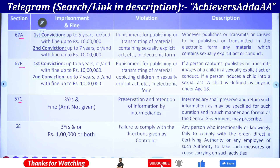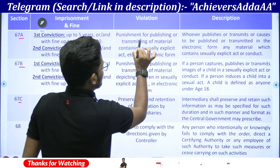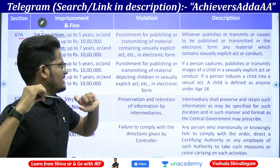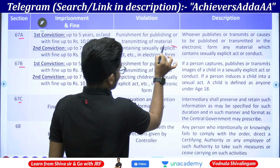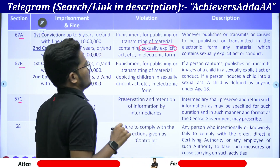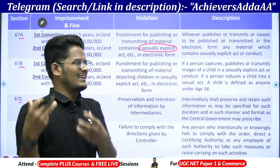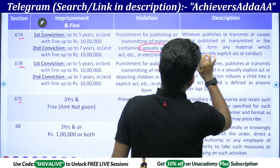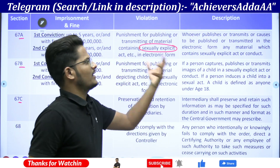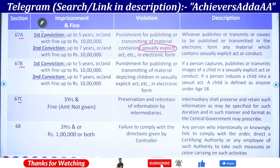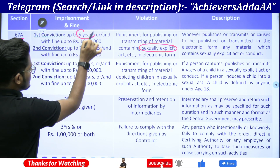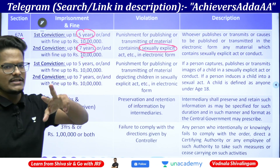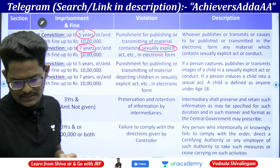Section 67A — punishment for publishing or transmitting a material containing a sexually explicit act in electronic form. Whoever publishes or transmits sexually explicit act or conduct in electronic form — first conviction: five years. Second conviction: seven years. Fine is 10 lakh in both cases. Section 67B — punishment for publishing or transmitting child pornography, a newly introduced section in the 2018 amendment. If you are capturing or publishing an image of a child under the age of 18 in a sexually explicit act or conduct — first conviction: five years, second conviction: seven years, fine: 10 lakh. Same as 67A.